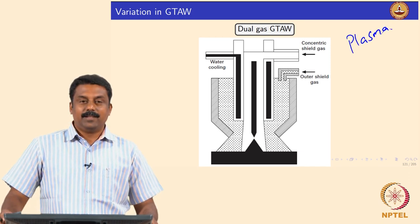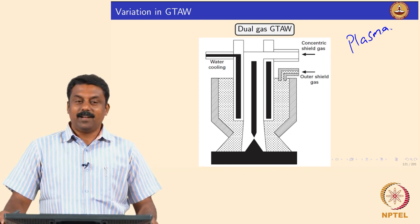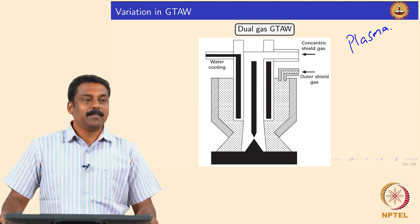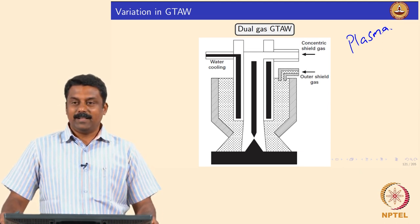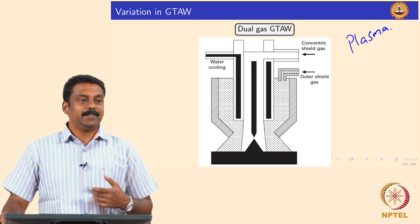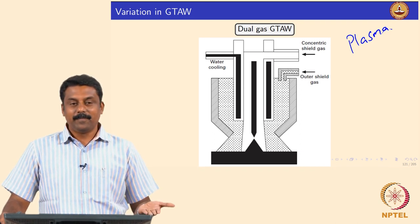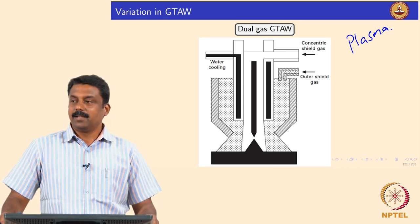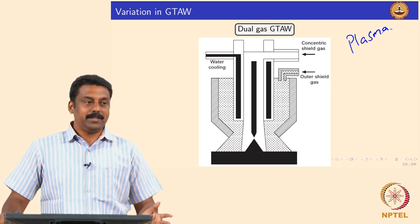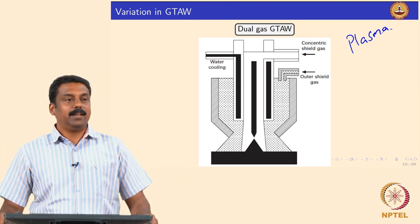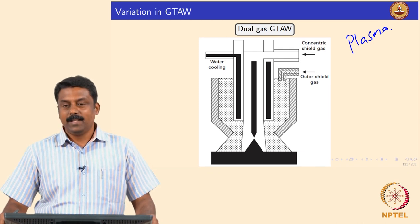Recall why we are not calling plasma welding as arc welding or arc welding as plasma welding — they are two different entities. When I taught you the physics of arc, plasma is a state. It is said that arc becomes plasma when the arc becomes electrically neutral.